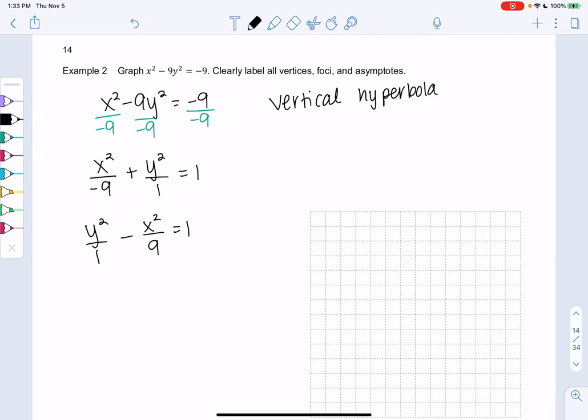So that means my a is 1 because a is always whichever one comes first. And b is 3 for 9. 3 squared is 9. So that'll help us find all the properties.